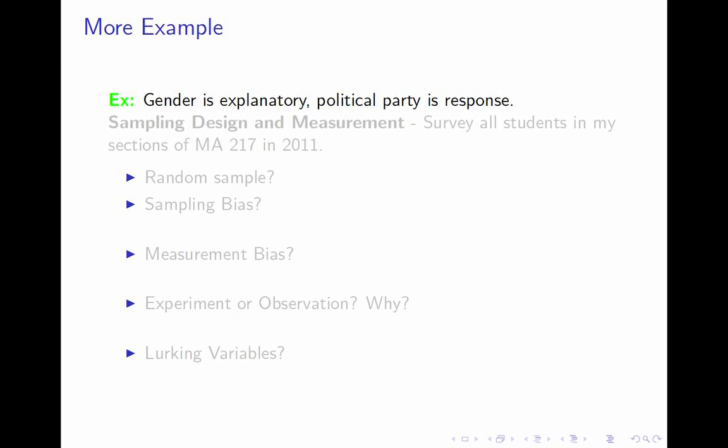Step two is the sampling design and step three is the measurement. For my sampling design, I'll use the survey I gave on the first day of class, but since I don't have all that data yet, I'll use the survey I did for my sections of 217 in 2011 — I believe it was three sections. The measurement is that survey I gave on the first day of class.